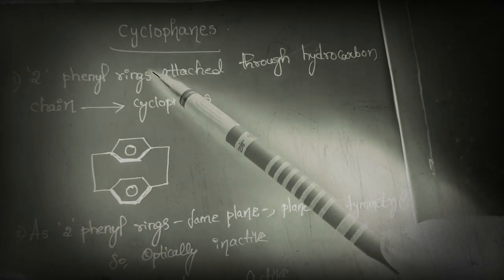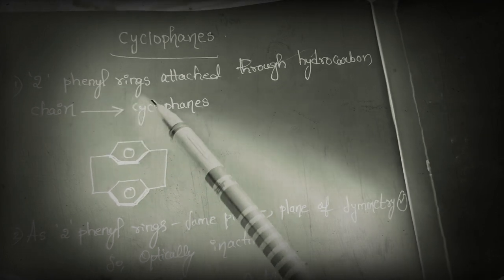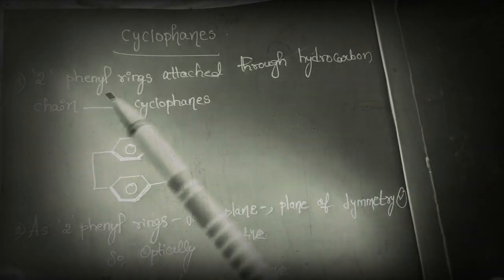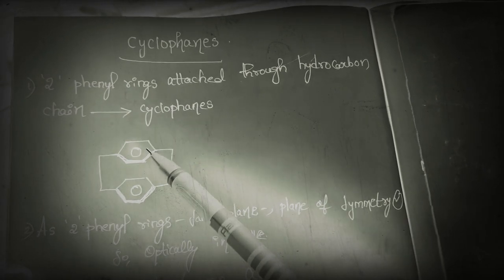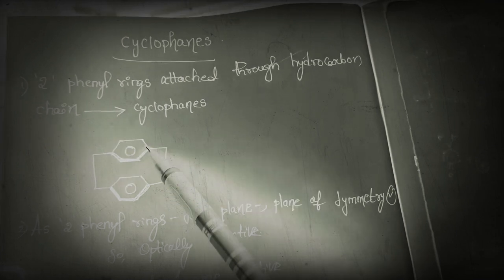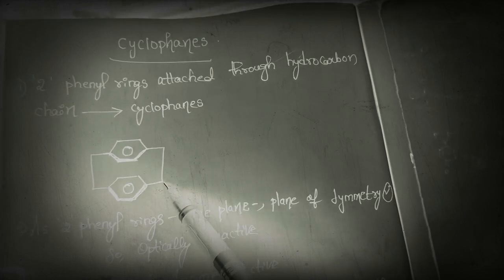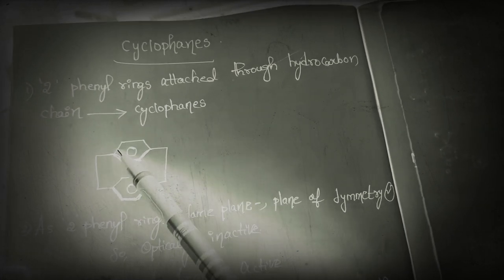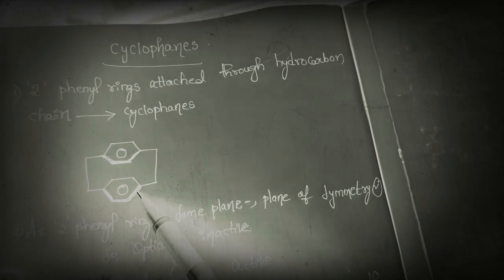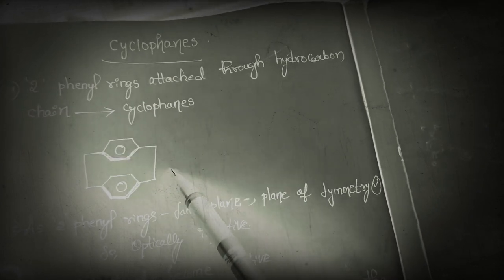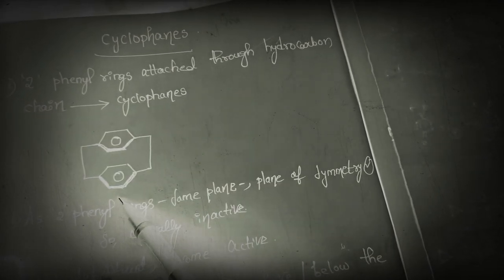First of all we should know about cyclophanes. Cyclophanes means two phenyl rings attached through a hydrocarbon chain are called cyclophanes. Observe this — these are the two phenyl rings and these two phenyl rings are attached through a hydrocarbon chain. Here CH₂ and CH₂ are present, so the phenyl rings are attached through a hydrocarbon chain. These are called cyclophanes.